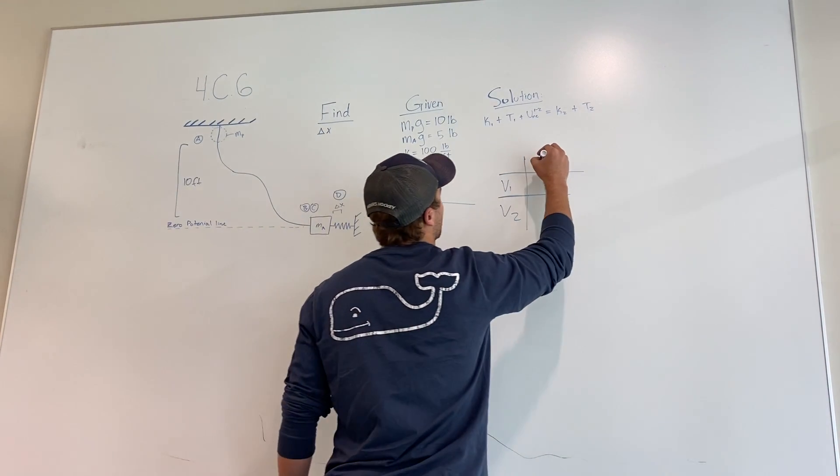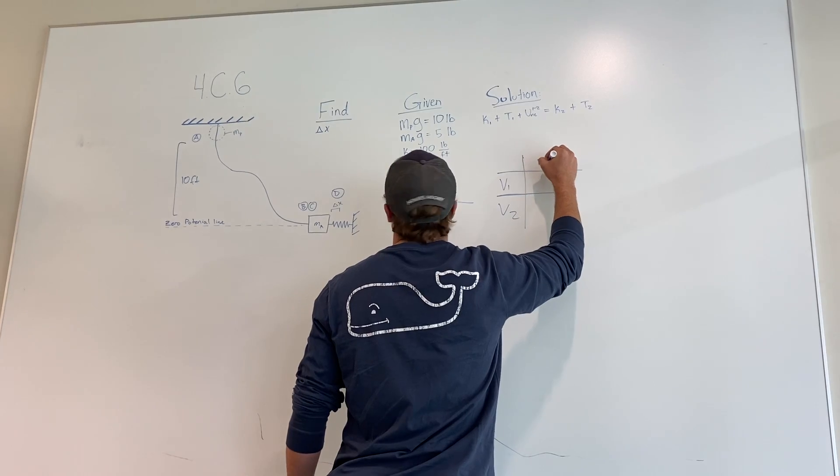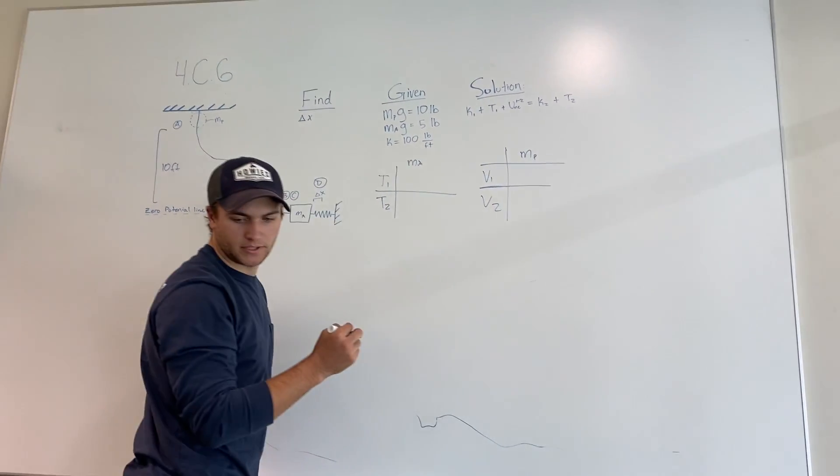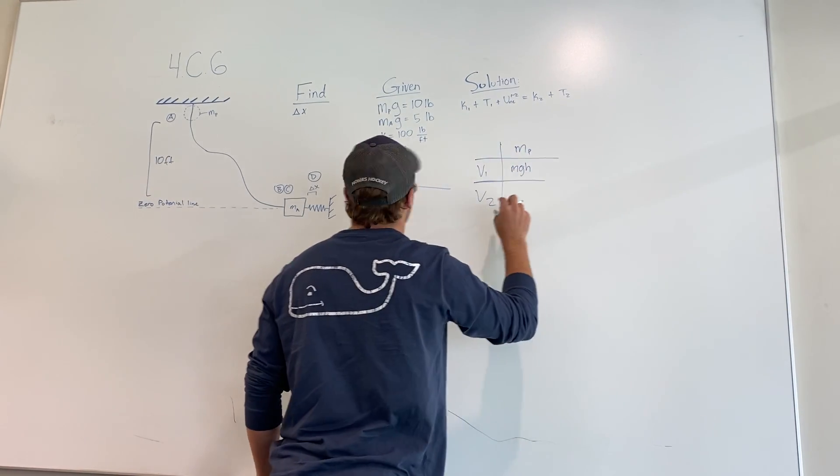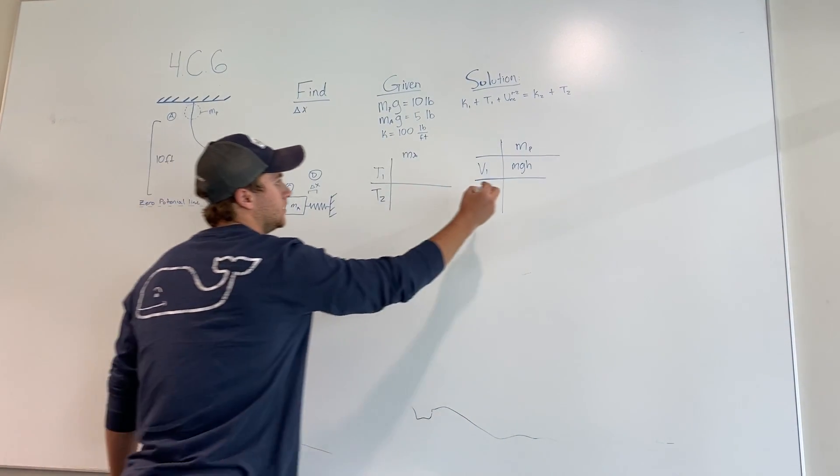So at mass P, the potential 1 is just M P times H. And the potential at 2 is zero.